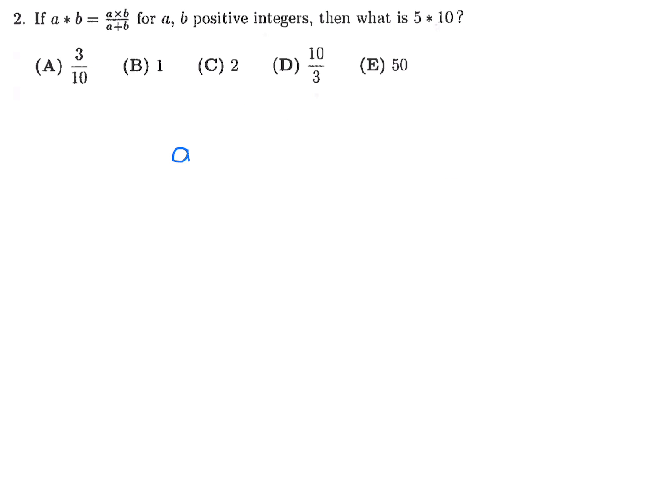If A star B is A times B over A plus B for A, B positive integers, then what is 5 star 10? Using the same definition, it would be 5 times 10 over 5 plus 10, and that of course is 50 over 15. If you divide top and bottom by 5, you get 10 over 3.